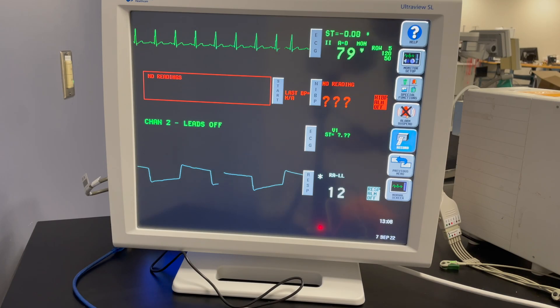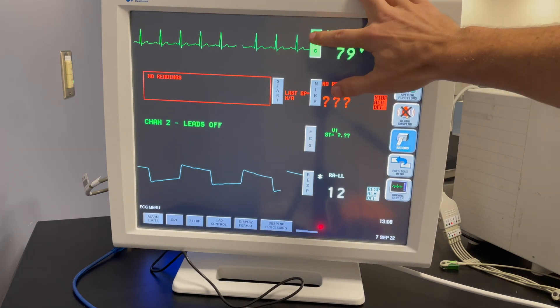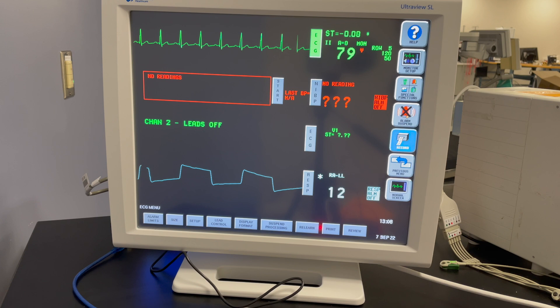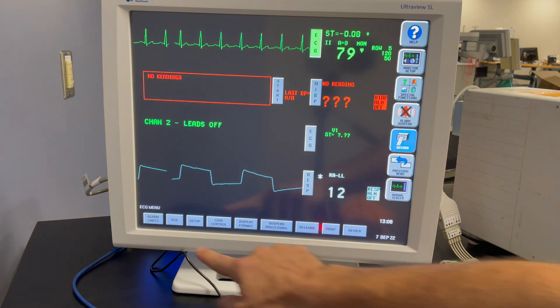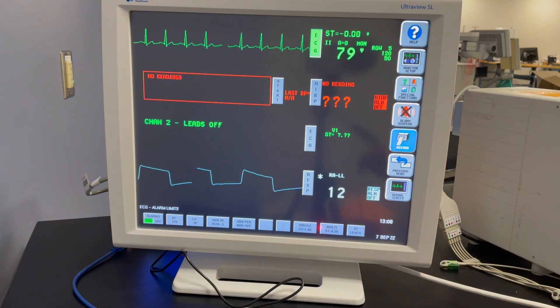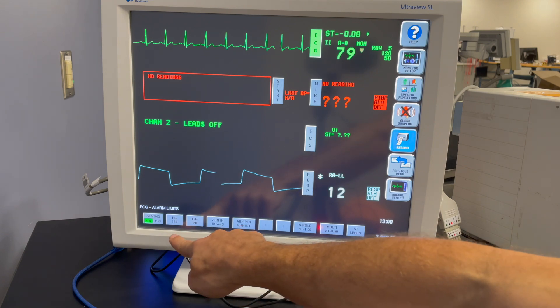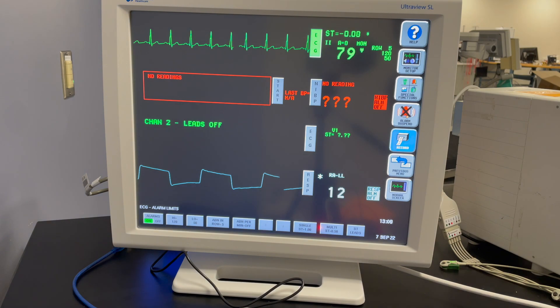Now let's say we want to test the high alarm for our ECG. If we go to the electrocardiogram menu, we can pull up the alarm limits and we can see the high limit is currently set to 120 and the low limit is set to 50. So if we exceed 120 beats per minute, we should get an alarm.